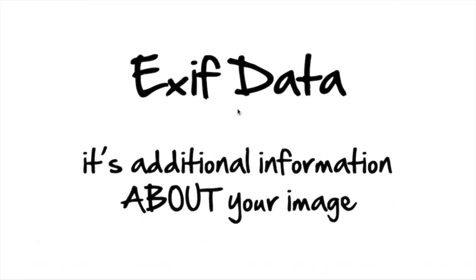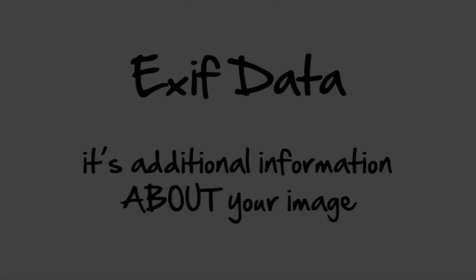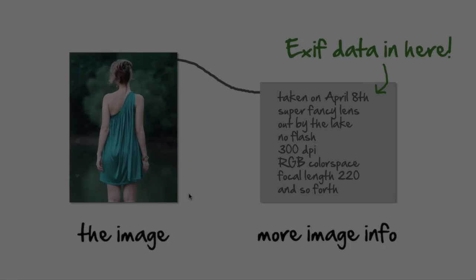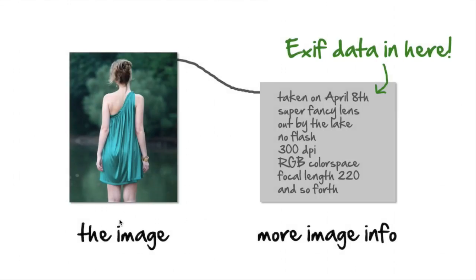Today we have a quick explanation of something called EXIF data. EXIF data is a type of additional data included with many photo files. It's not the image itself, but rather information about the image. It contains details like when and where a photo was originally taken, what camera settings were used to take that photo, and so on.